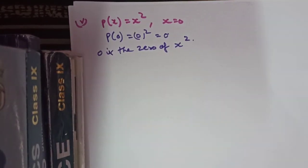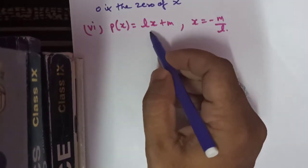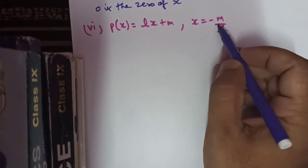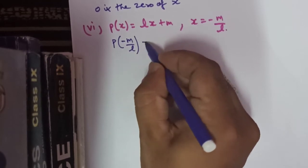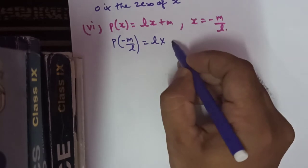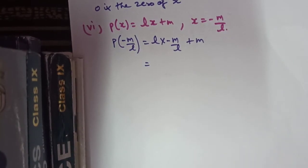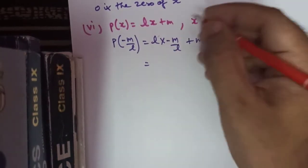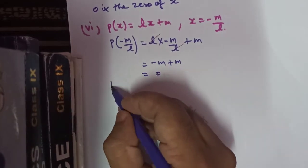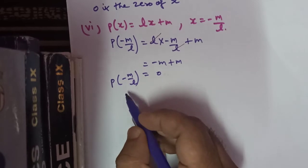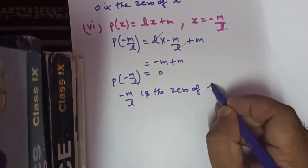For the sixth part, polynomial p(x) equals Lx plus M, where L and M are constants, and we check whether minus M upon L is the zero. We find p(minus M upon L): substituting x as minus M upon L gives L times minus M upon L plus M. The L cancels out, leaving minus M plus M equals 0. So p(minus M upon L) equals 0, meaning minus M upon L is the zero of the polynomial Lx plus M.